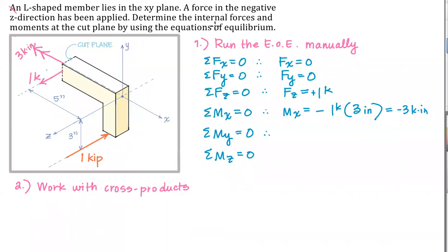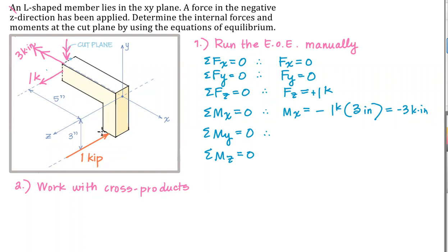Let's put that internal moment about y back at the cut plane. The tendency of the force is to rotate the body double-arrow up, therefore the equal and opposite moment back at the cut plane is double-arrow down. The distance between this force and its perpendicular distance back to the axis is going to be five inches. One times five is going to be five — five kip-inches double-arrow down. M sub y is equal to a one-kip force at a distance of five inches, double-arrow down, or negative y — so that's negative five kip-inches.